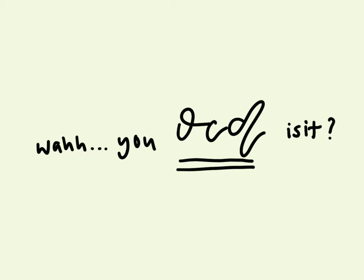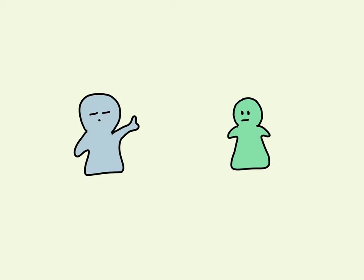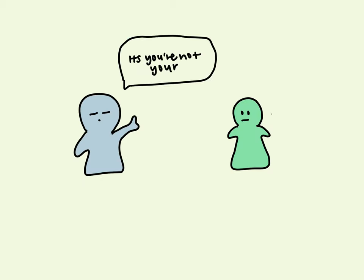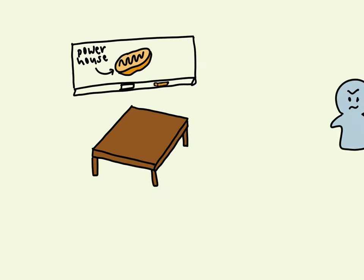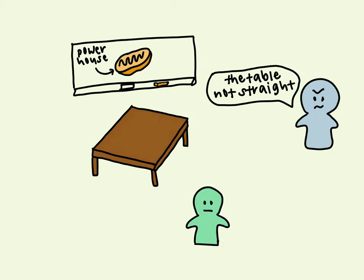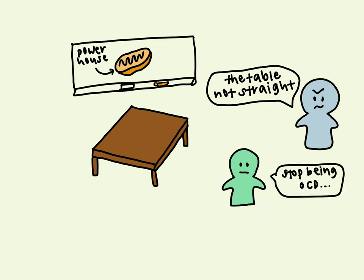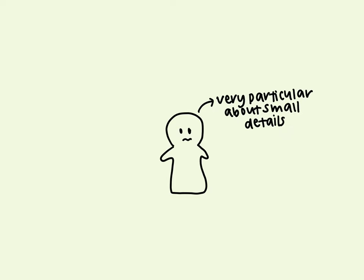"Wah, you OCD is it?" — a common remark that can be heard often in the classroom, when for example your classmate points out a small grammatical mistake or rearranges the tables when they are slightly out of line. In a normal setting, people use the term OCD often to describe someone who is very particular with small details, sometimes to the point of being annoying.